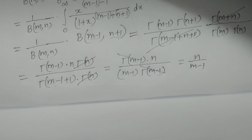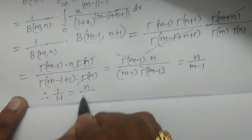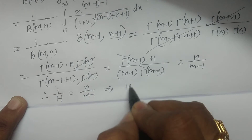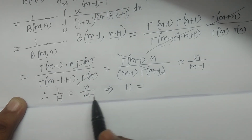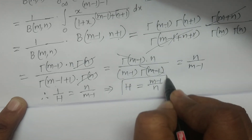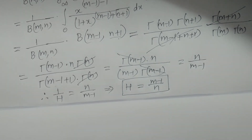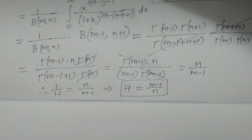This result is 1 by h, so 1 by h equals n divided by m minus 1. Taking the reciprocal, the harmonic mean h equals m minus 1 by n. This is the harmonic mean of the beta distribution of second kind: H = (m minus 1) / n. Hope you understand. Thank you very much.